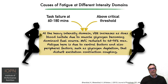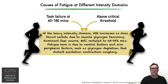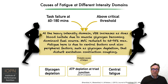At the heavy intensity domain, VO2 increases, as does blood lactate, due to muscle glycogen becoming the dominant substrate or fuel source. MVC is reduced to 65 to 75 percent of max. Fatigue here is due not only to the central factors seen before, but also peripheral factors such as glycogen depletion that disturb excitation-contraction coupling in the muscle. The possible causes of fatigue in this situation are glycogen depletion, ATP depletion at the triad junction (but not total ATP levels), and central fatigue.